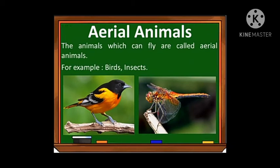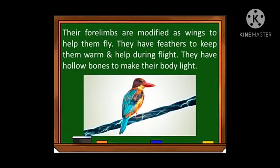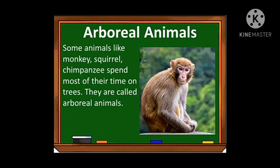The next category is aerial animals — animals which can fly. Their forelimbs are modified as wings to help them fly. They have feathers to keep them warm and to help during flight. They also have hollow bones to make their body light. Though they are four-legged animals, two of their legs — the forelimbs — are modified into wings. Hollow bones are tube-like structures that help them fly easily.